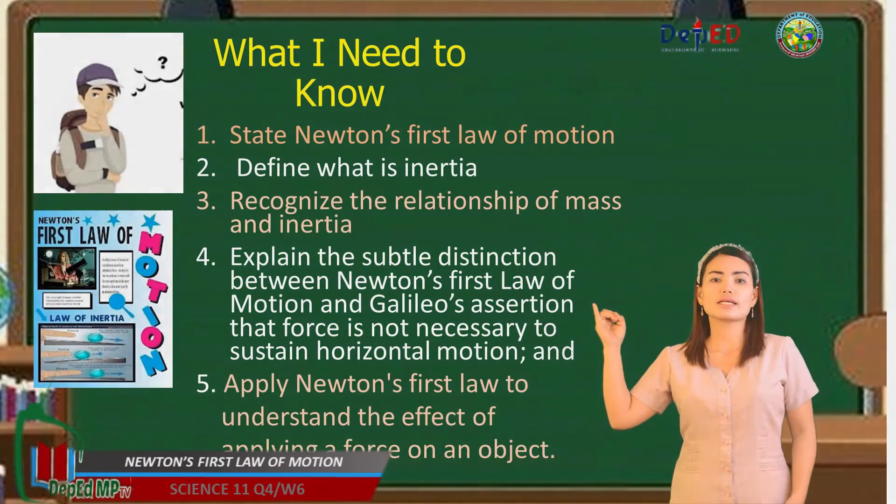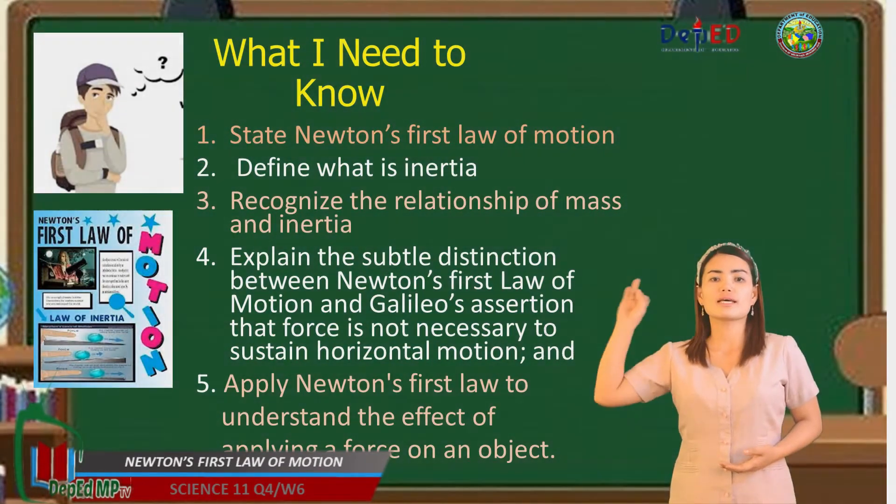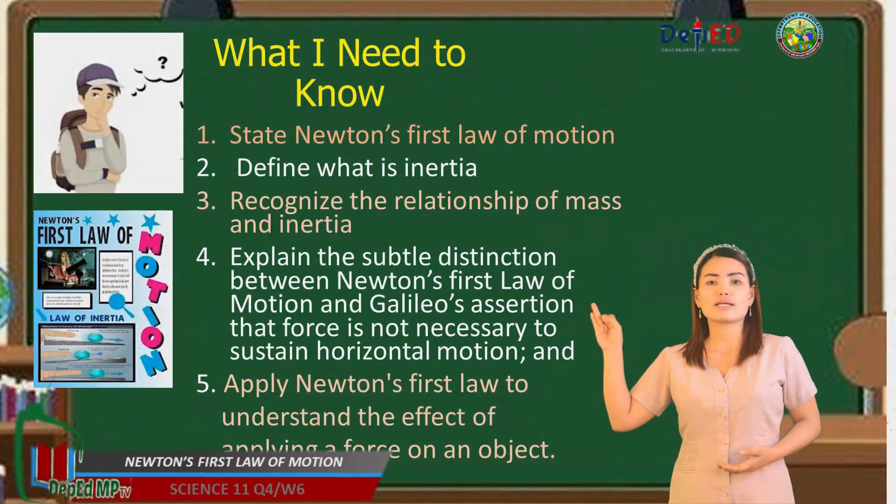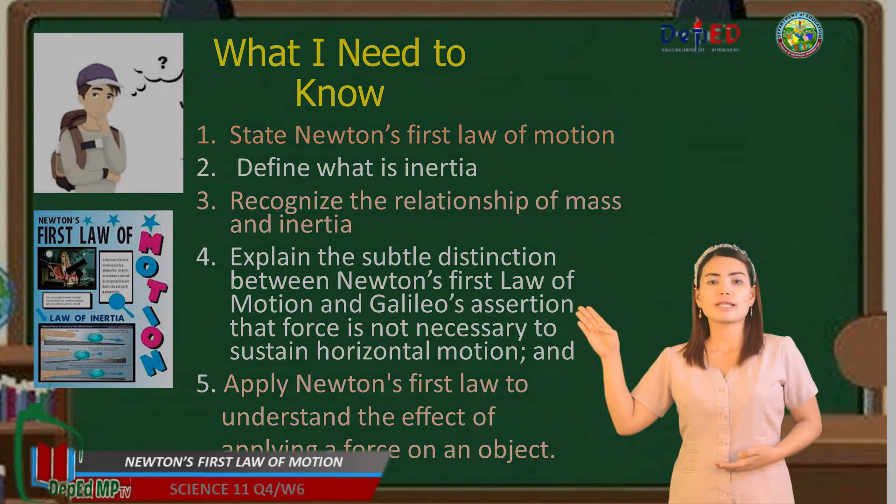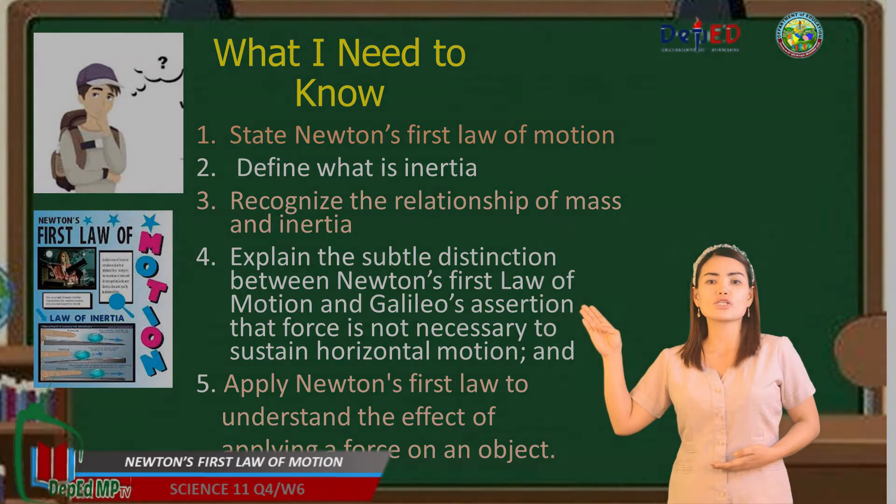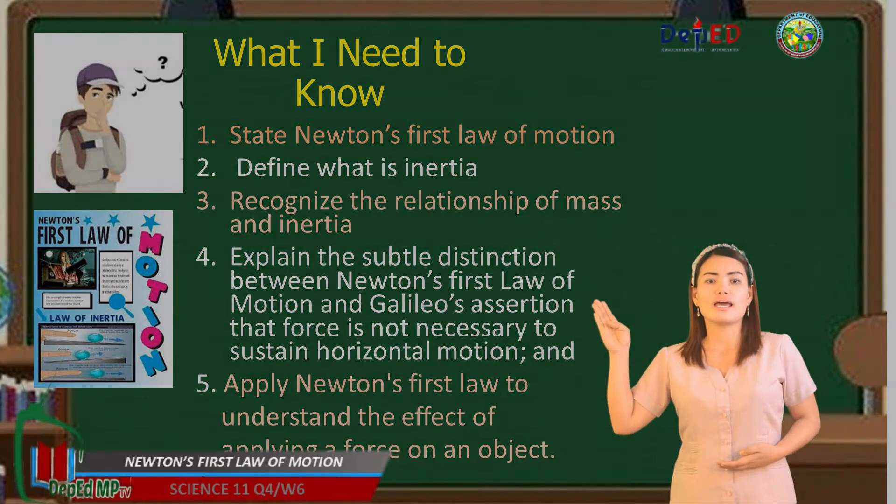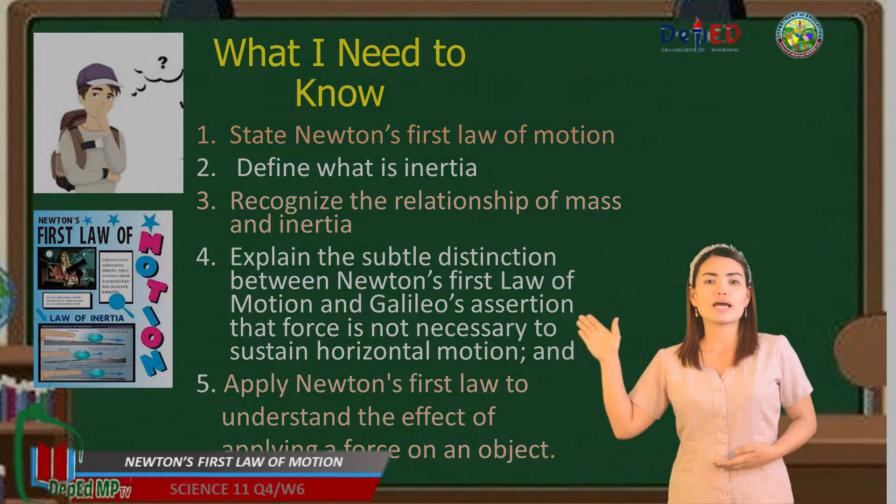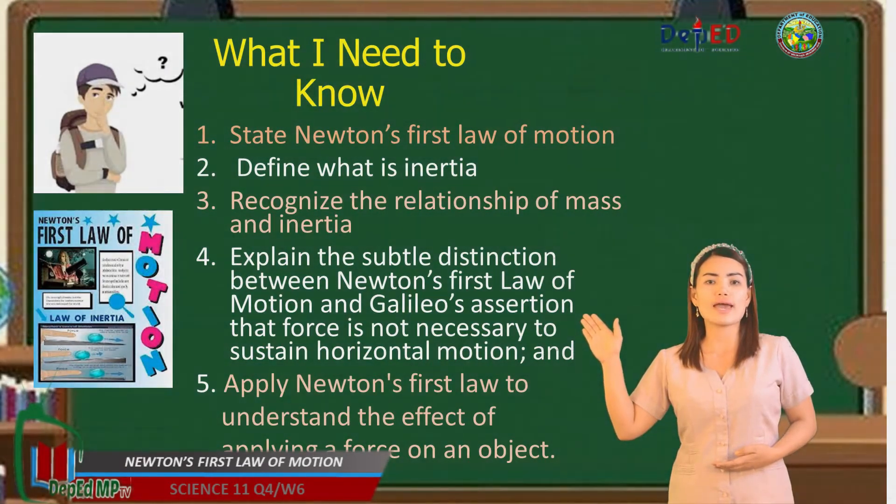First, state Newton's first law of motion. Second, define what is inertia. Third, recognize the relationship of mass and inertia. Fourth, explain the subtle distinction between Newton's first law of motion and Galileo's assertion that force is not necessary to sustain horizontal motion. And fifth, apply Newton's first law to understand the effect of applying a force on an object.